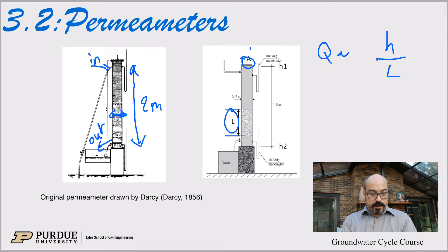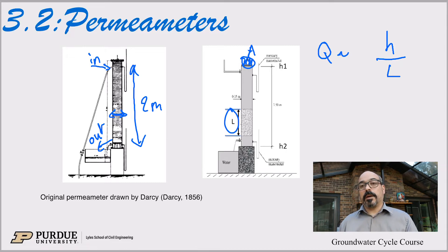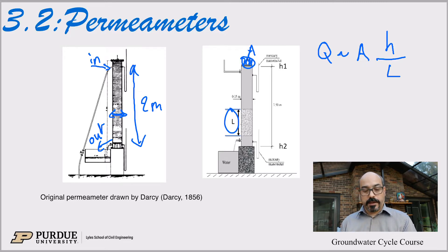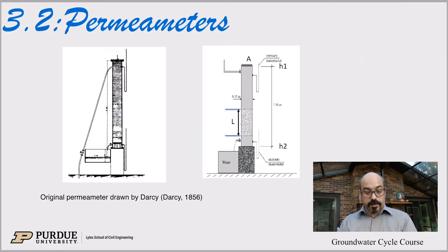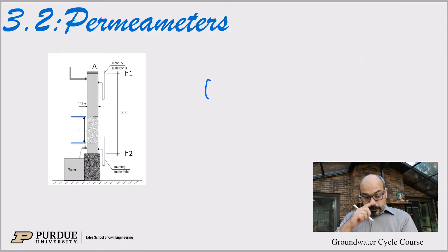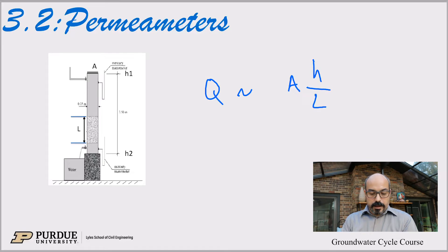The area of the column also matters: the larger the tube, you should expect to get more flow than from a tiny tube. So the area should also influence the flow. This is basically the first description of Darcy's law: the discharge out of the permeameter should be proportional to the area A, the head H, and inversely proportional to the length of porous media L. So Q is proportional to A·H over L.